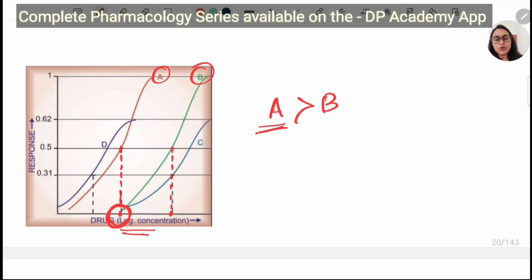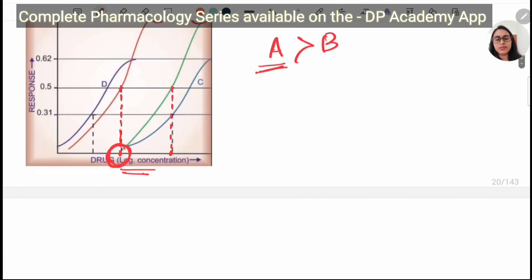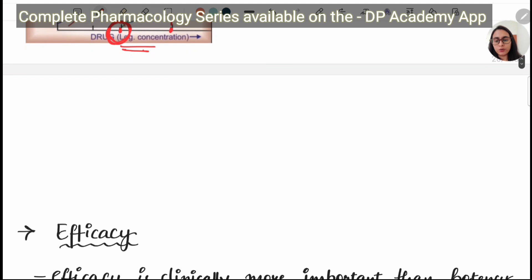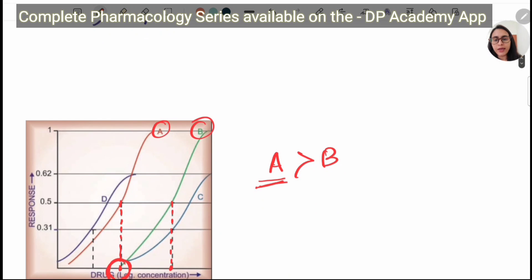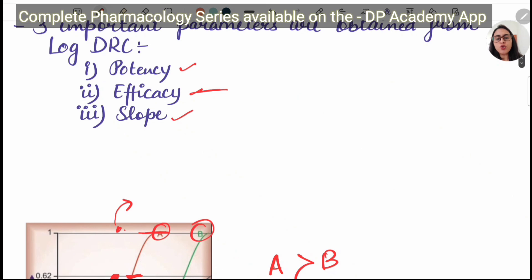Drug A requires a lesser dose, so A is more potent than drug B. Left and right on the graph tells about potency — a drug shifted to the left is more potent. The second point is efficacy. Efficacy tells about the maximum effect a drug can give. Higher and lower on the graph tells about efficacy — drug A has more efficacy than drug B. So right and left tells about potency, and higher and lower tells about efficacy. Clinical efficacy is more important than potency.